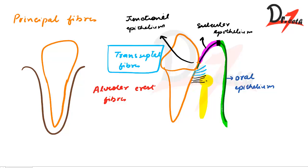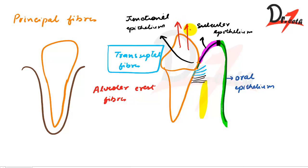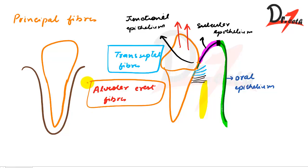The alveolar crest fibers extend obliquely from the cementum just beneath the junctional epithelium and insert into the alveolar crest bone. Their function is to prevent extrusion of the tooth and to resist lateral tooth movement.